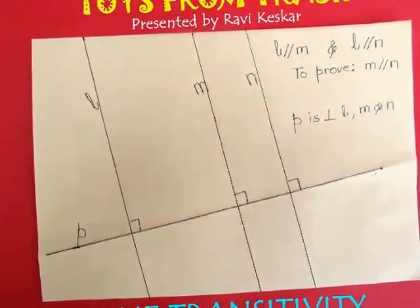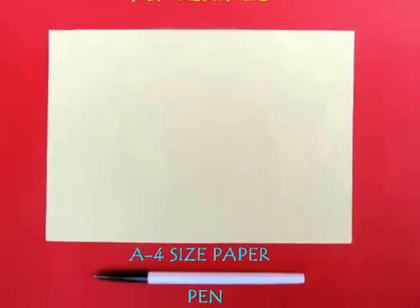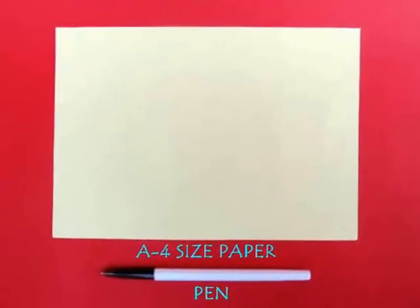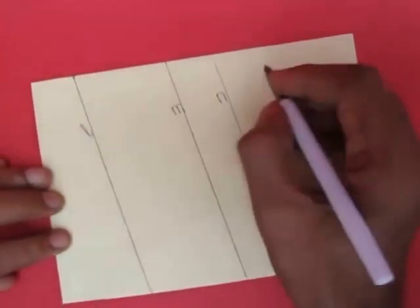We can observe and prove the transitivity of parallel lines with paper folding. All we need is a paper, pencil and a ruler.